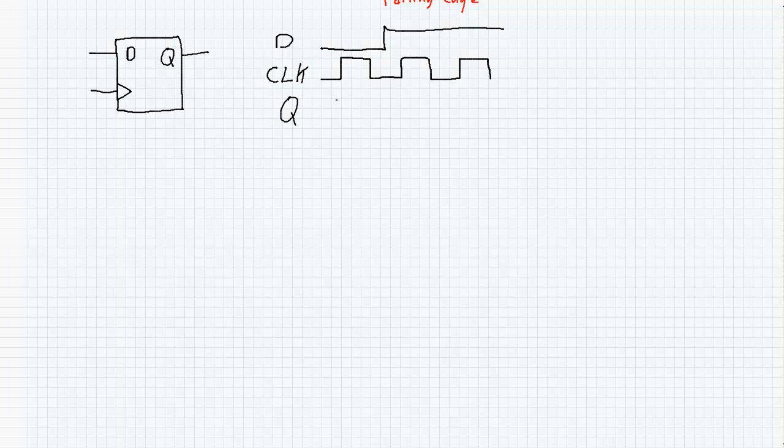So in an ideal flip-flop, on the rising edge of the clock, let's say Q starts at 1. The rising edge at this exact point here, D is going to go from 1 down to 0. The value of D is going to get clocked into Q. Then over on this rising edge, D becomes 1, so Q is going to become 1 at that instant. It's going to stay at 1 because D stayed at 1. This would be for an ideal flip-flop.